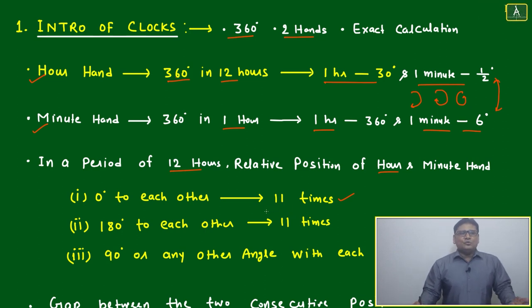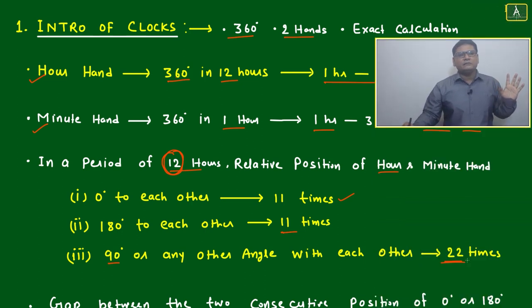180 degrees to each other means just opposite - this is also 11 times in every 12 hours. 90 degrees or any other angle with each other is 22 times. Any angle other than 0 and 180, perpendicular - how many times in 12 hours? 22 times.